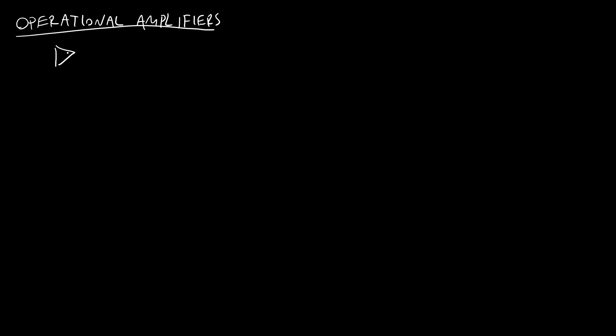This video is going to be an introduction to operational amplifiers. These are going to be represented by a little triangle as a circuit symbol with two lines coming in on the left as inputs and one line coming out on the right as an output. Those are labeled as our positive or negative — also called our non-inverting and inverting inputs — and then we have an output voltage V_out. We'll talk more about what that means in a minute.